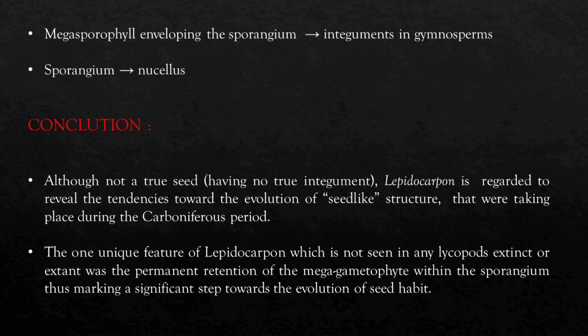The sporangium in Leptocarpon resembles the nucellus in gymnosperms. To conclude, although Leptocarpon has no true seeds, it reveals a tendency towards the evolution of seed-like structures. The one unique feature of Leptocarpon, which is not seen in any lycopods — extinct or extant — was the permanent retention of the megagametophyte within the sporangium, thus making a significant step towards the evolution of seed habit.